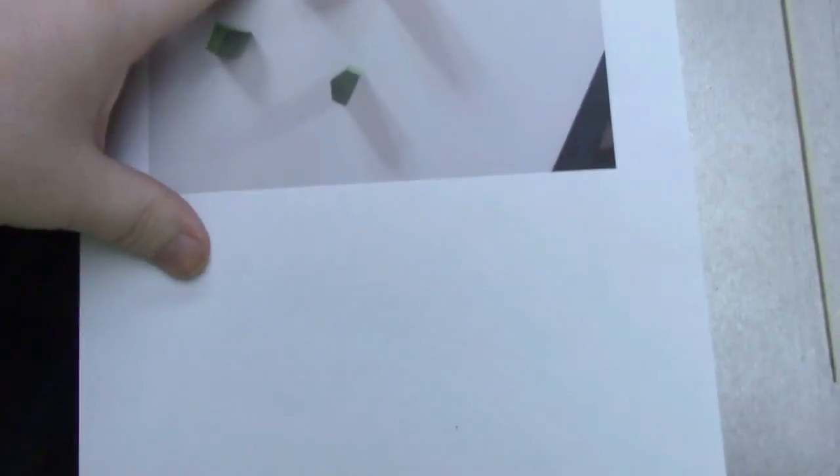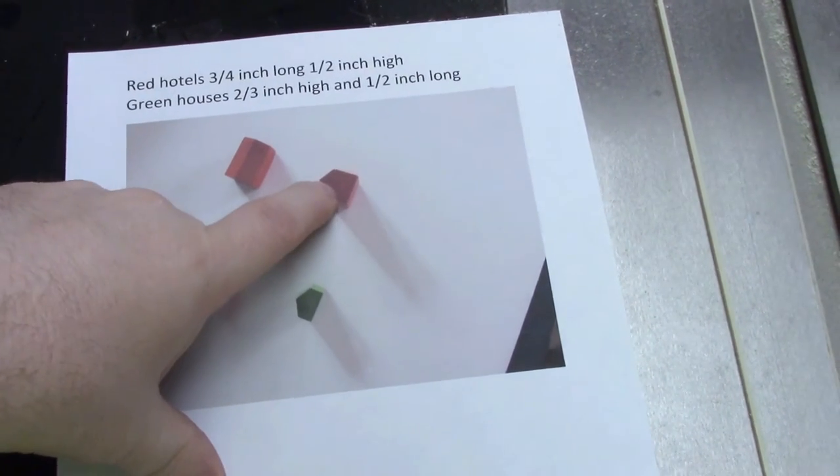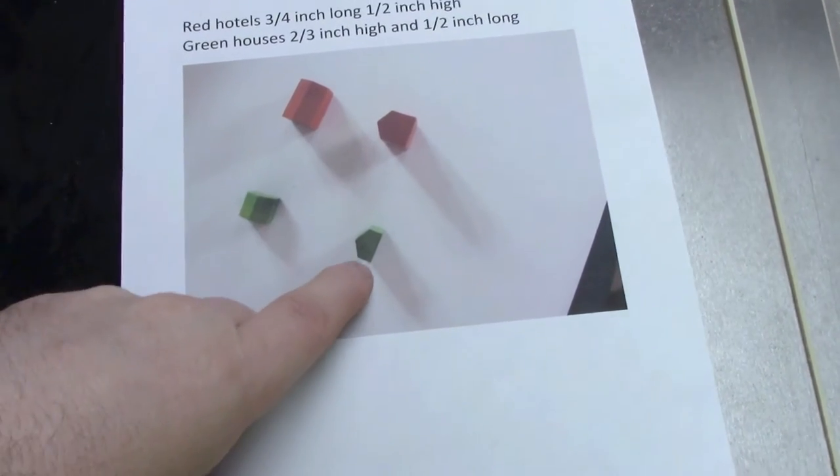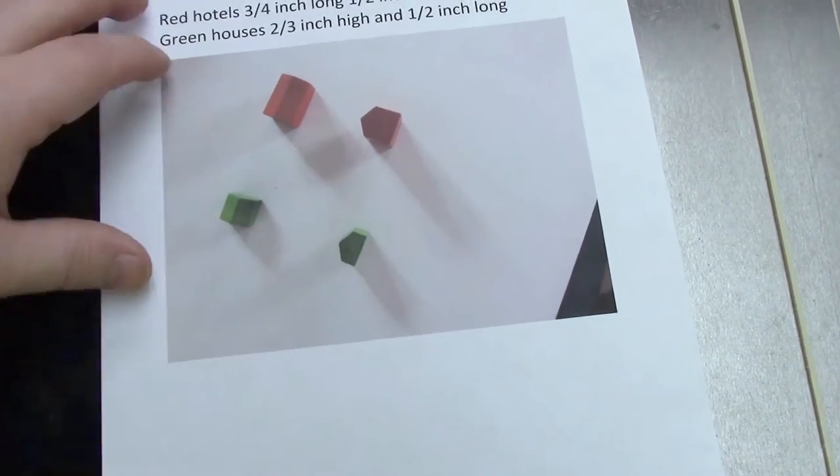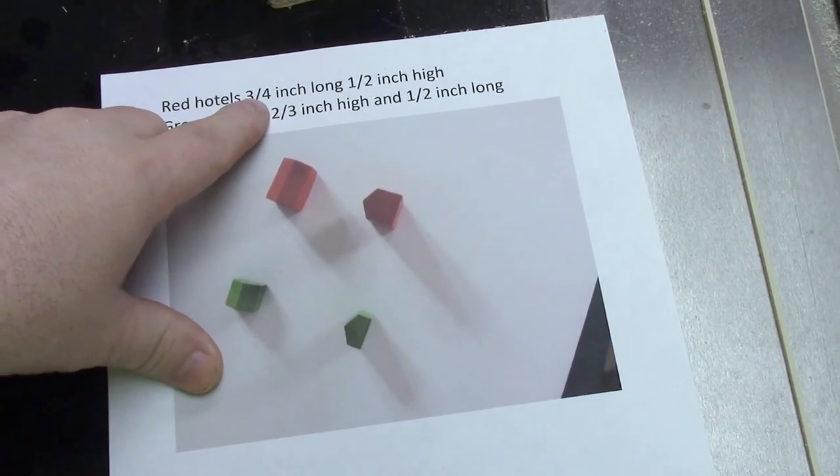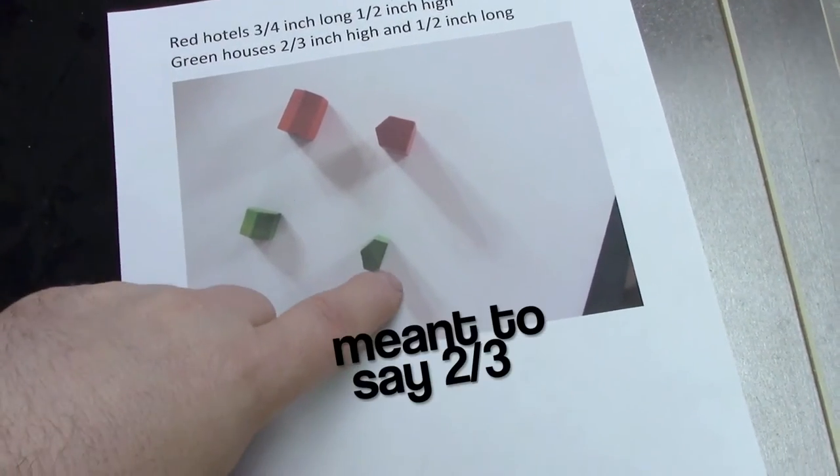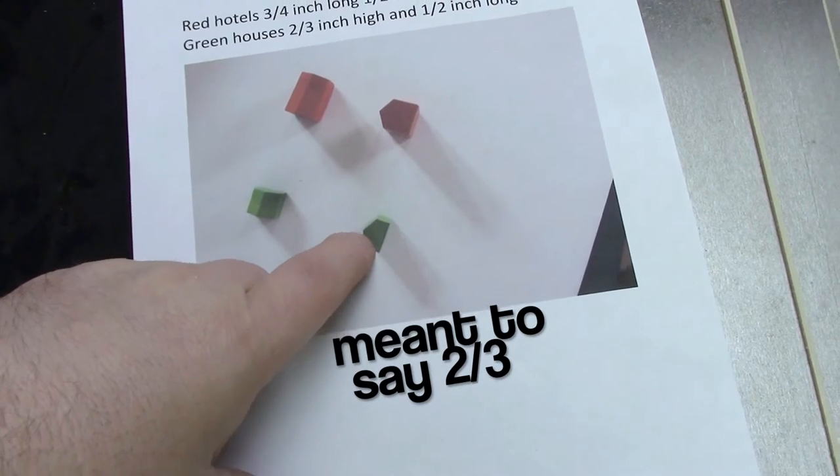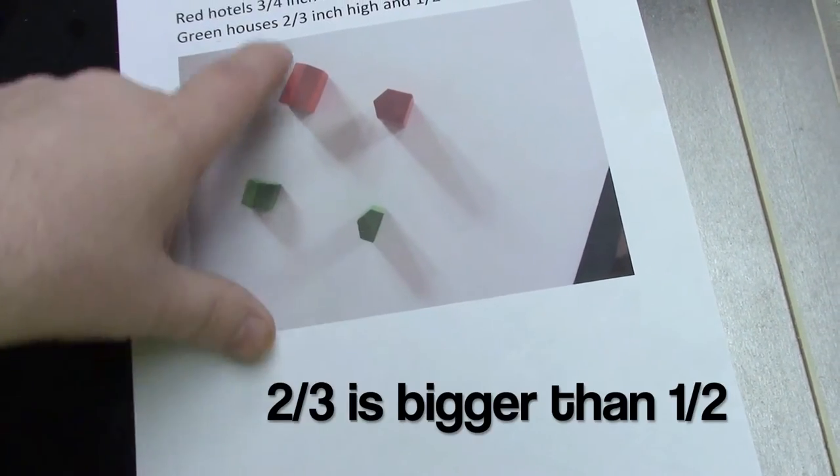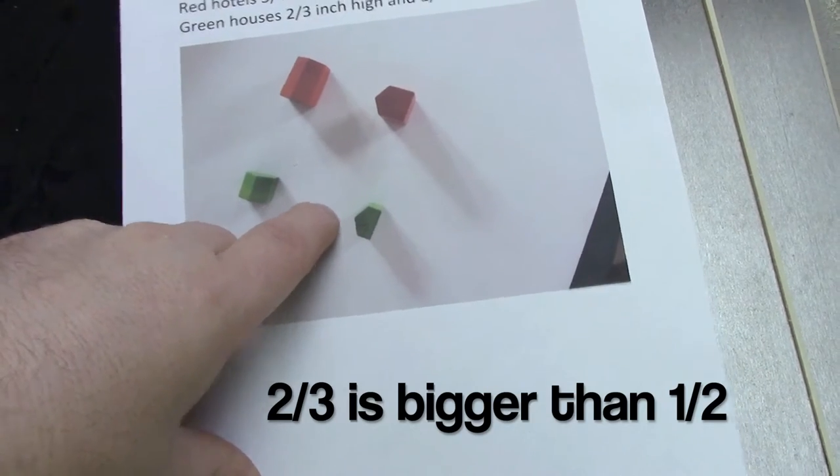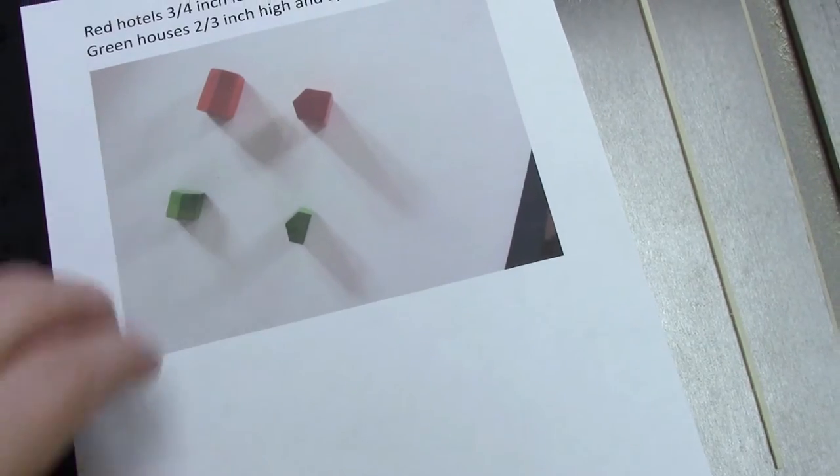They're saying these are what they want me to replicate in wood, which would be pretty straightforward - the larger hotel that's taller and a shorter green house from Monopoly. The red hotels are three quarter inch long and a half inch high. The green houses are three quarter inch high and a half inch long. Well that wouldn't make sense because two thirds is larger than one half. So that would make the houses taller than the hotels.